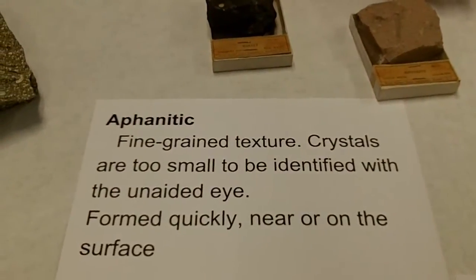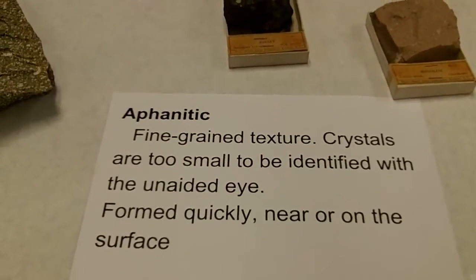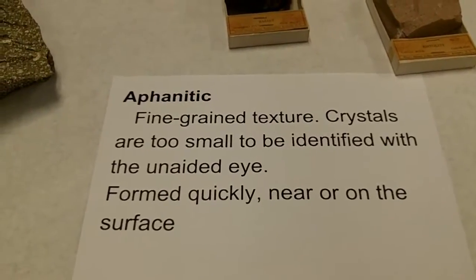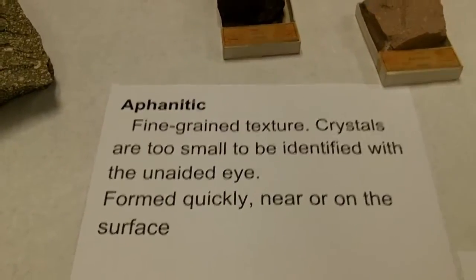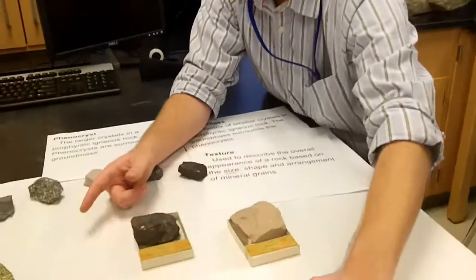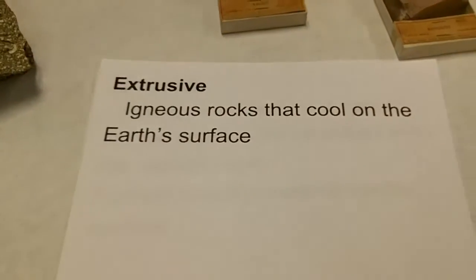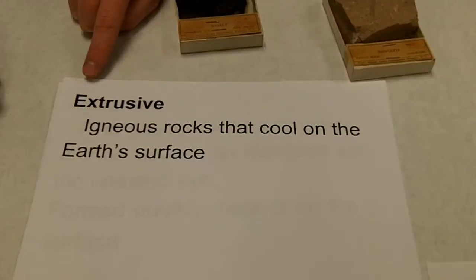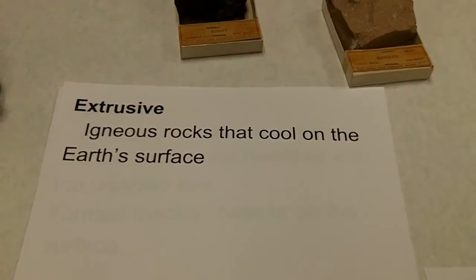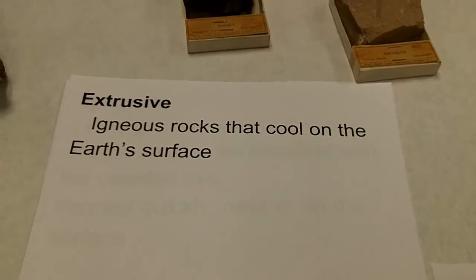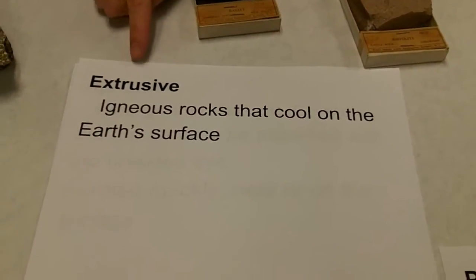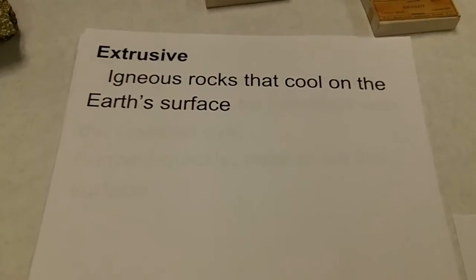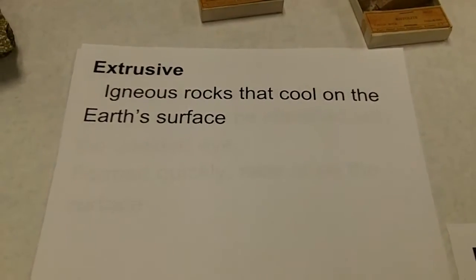The crystals are too small to be identified with the unaided eye. If we had a microscope, you'd be able to see crystals. It formed quickly near or on the surface. Last video we saw that those other rocks were intrusive, and this type is called extrusive. Think about the word: 'ex' means outside — like excluded, exit, extraction — pulling out. So extrusive means rocks that cooled outside the Earth, on the Earth's surface. They cooled really fast. So what we're looking at here is an extrusive rock that's aphanitic — really small crystals.